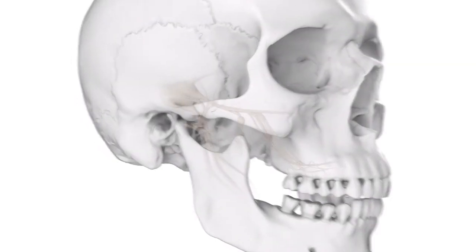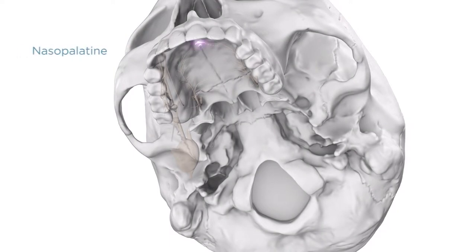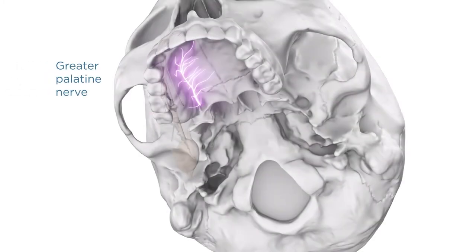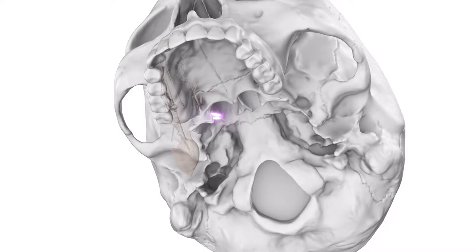The nasopalatine nerve passes downward and forward on the nasal septum, enters the incisive canal, and reaches the oral cavity via the incisive foramen to provide sensation to the palatal mucosa of the premaxilla. A pharyngeal branch exits the ganglion posteriorly to serve portions of the sphenoidal sinus and mucosa posterior to the auditory tube. The greater or anterior palatine nerve emerges through the greater palatine foramen to supply general sensation to the soft tissues of the hard palate and palatal gingiva, while other branches exit from the lesser palatine foramina and innervate the soft palate, uvula, and tonsillar area.